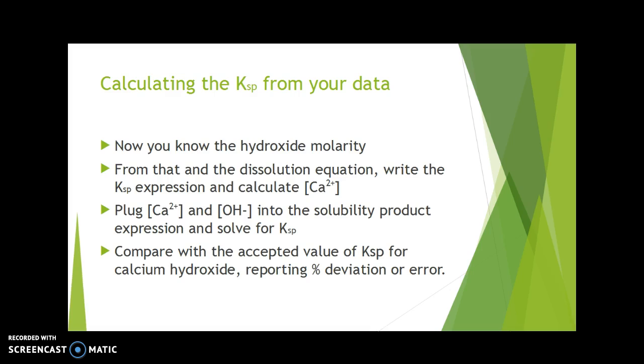You will then compare that with the accepted value of Ksp for calcium hydroxide. And once you have done that, you will report the percent deviation or error as the absolute value of accepted minus experimental divided by accepted, then multiplied by 100. That gives you your percent deviation or percent error.